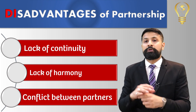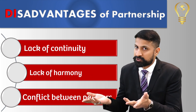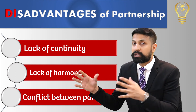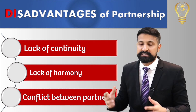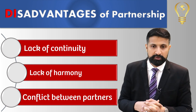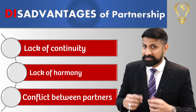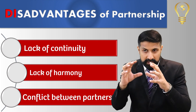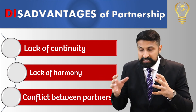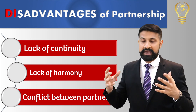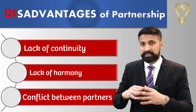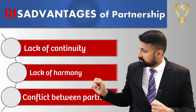Lack of continuity بھی ہوتا ہے partnership business میں — اگر کوئی owner انتقال کر جائے تو business shut down ہو جاتا ہے کیونکہ replacement آنا بہت مشکل ہوتی ہے۔ اگر proper rules and regulations بنائے ہوں تو چل جاتا ہے، ورنہ normally partner کے جانے سے partnership چلنا مشکل ہو جاتی ہے۔ Lack of harmony بھی ایک issue ہے — آپ کو نہیں پتا کہ سامنے والا دل میں کیا سوچ رہا ہے، ہو سکتا ہے کوئی آپ کو use کر رہا ہو، آپ کے contacts یا نام کو use کر رہا ہو، پیچھے اپنا business setup کر رہا ہو۔